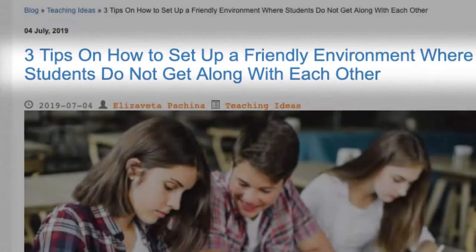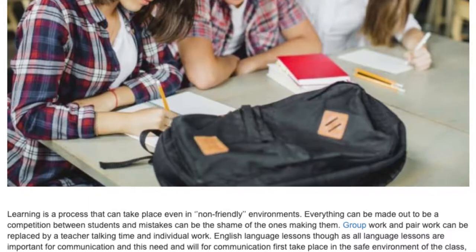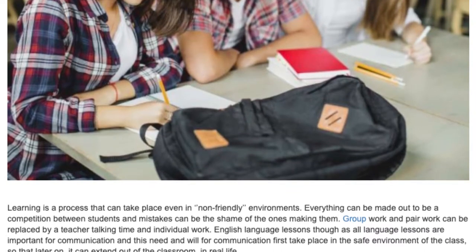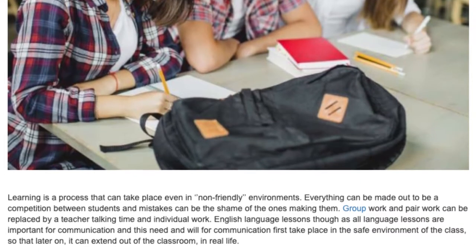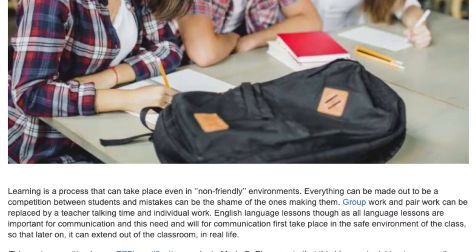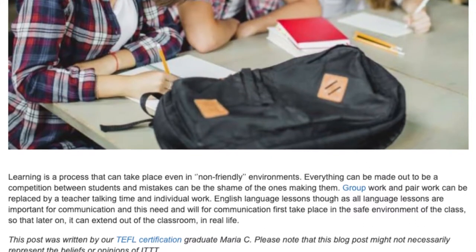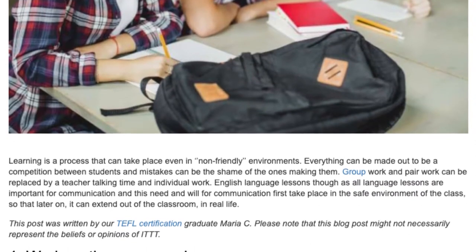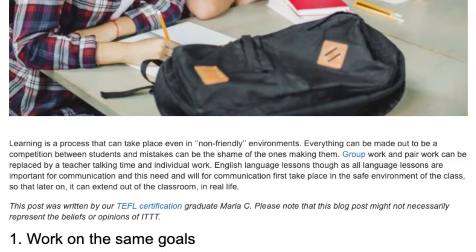Three tips on how to set up a friendly environment where students do not get along with each other. Learning is a process that can take place even in non-friendly environments — everything can be made out to be a competition between students, and mistakes can be the shame of the ones making them. Group work and pair work can be replaced by teacher talking time and individual work. English language lessons, as all language lessons, are important for communication, and this need for communication should first take place in the safe environment of the class, so that later it can extend out of the classroom in real life.